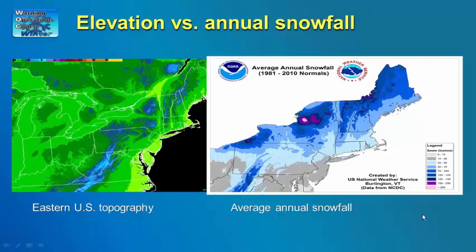The topography of the eastern U.S., shown on the left, is dominated by the coastlines stretching from Maine to Florida, and also by the Appalachian Mountains which run from southwest to northeast approximately 100 to 250 miles inland from the coast. The Great Lakes are located further to the north and west and play a large role in patterns of average annual snowfall observed across the area.